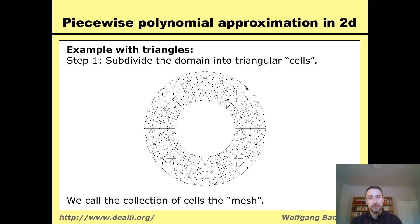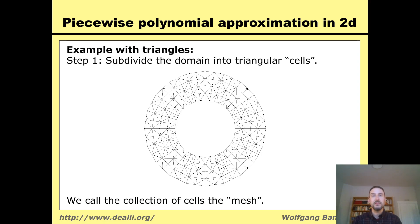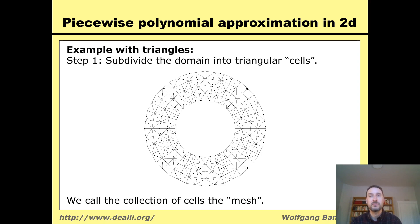Here's an example. My domain in this case is a ring — an annulus — and I've split it into triangles. Together we call this collection of cells the mesh, or the triangulation. The triangulation, or mesh, is fundamentally a subdivision of the domain into cells, and each one of the triangles in this picture is one cell.